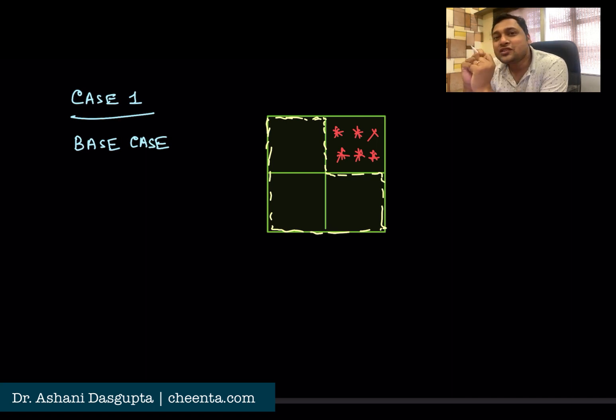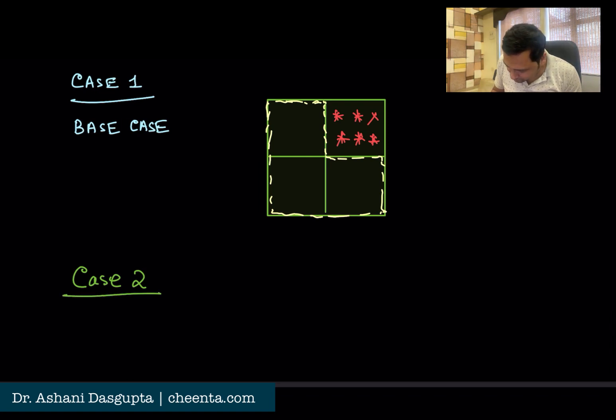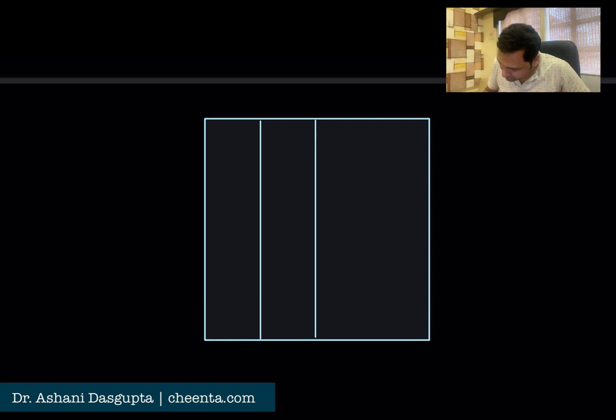Then we will do the next case — sometimes this is known as the inductive hypothesis. This is Case 2, for the 4×4 grid. Let's draw the 4×4 grid one more time. What we will do is divide it into 2×2 grids by putting a vertical line in the middle and a horizontal line in the middle.